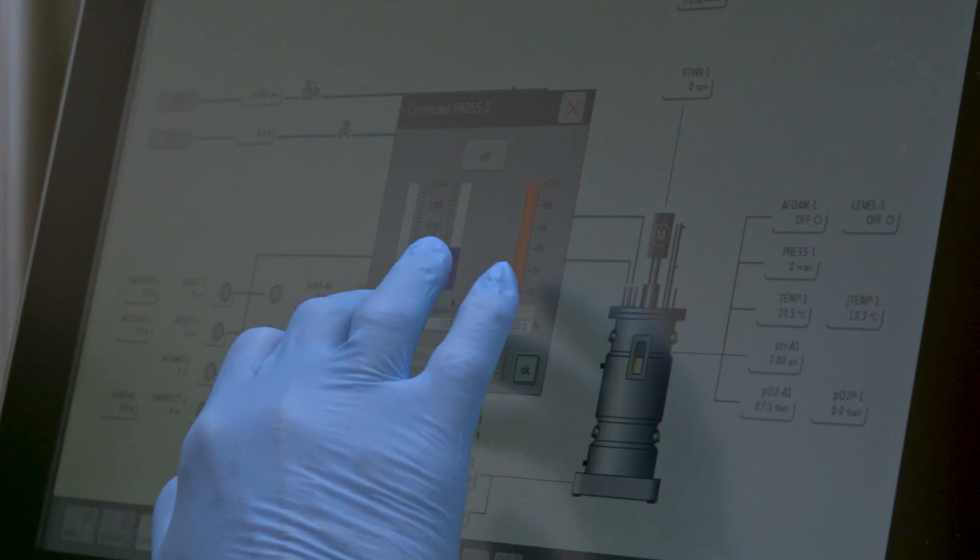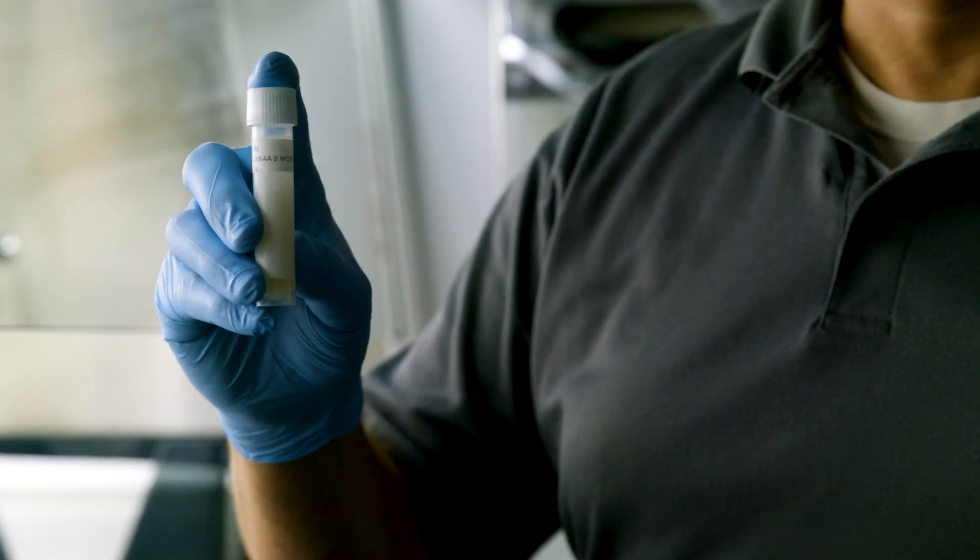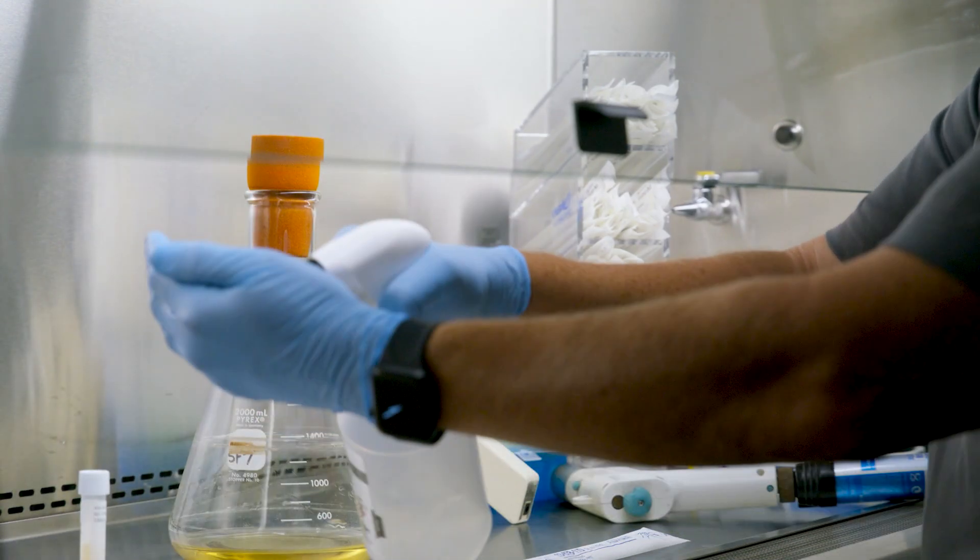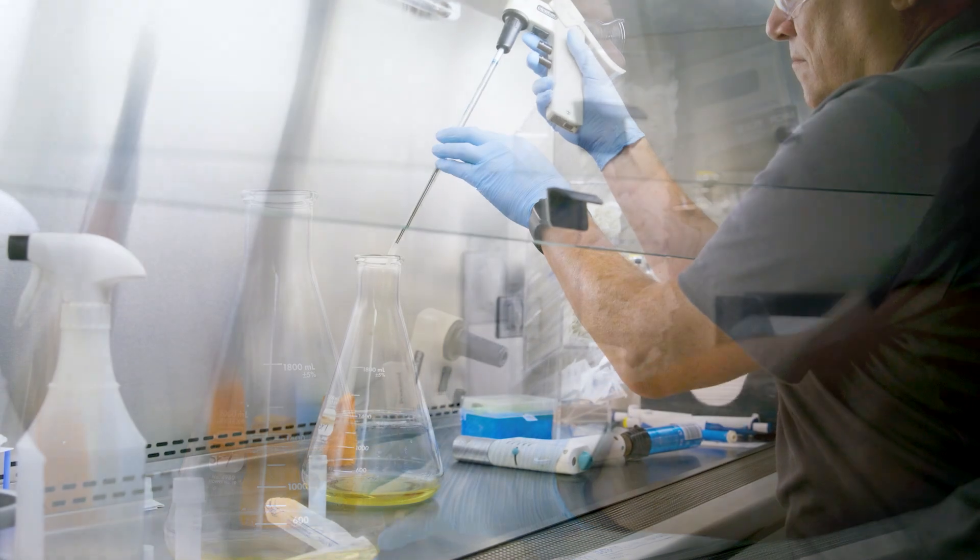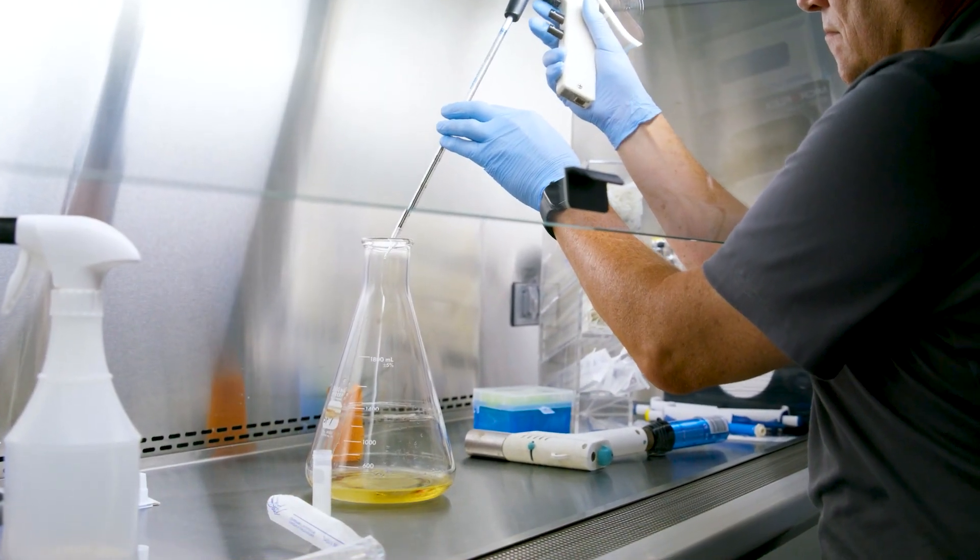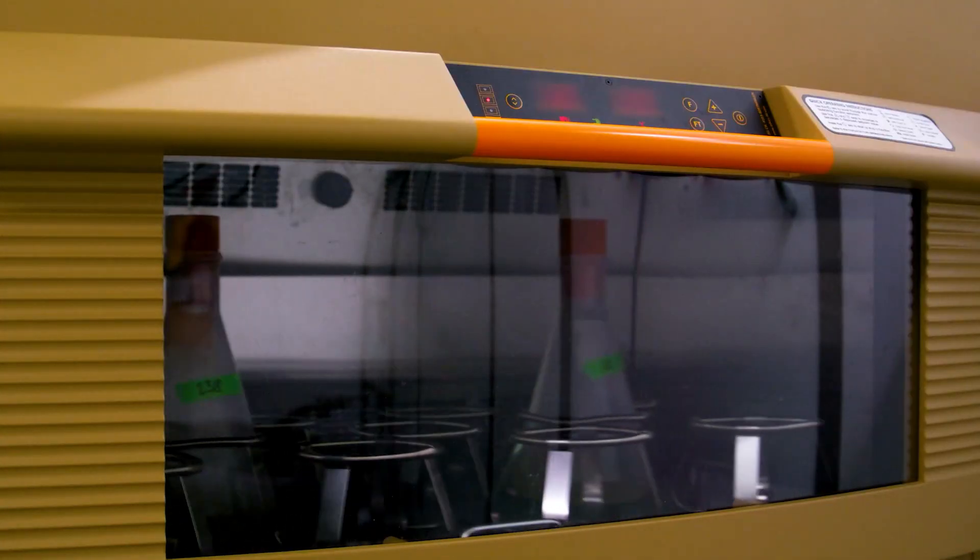In the microlab, we take a very small amount of cells in a cryo cap, take it out of the minus 80 freezer, let it come up to room temperature, and then we inoculate those cells into a shake flask, a very nutrient-rich medium.